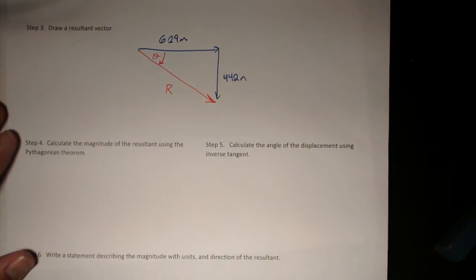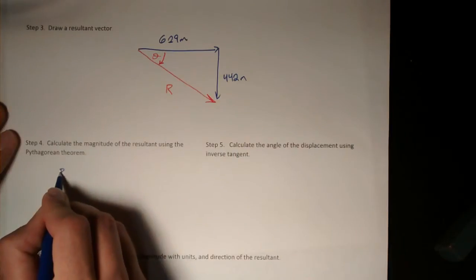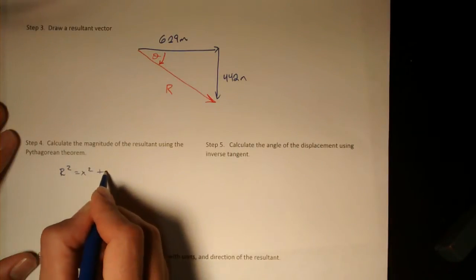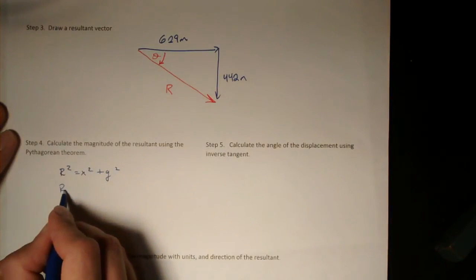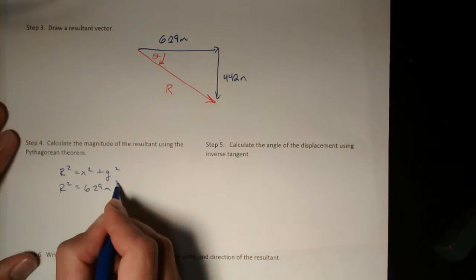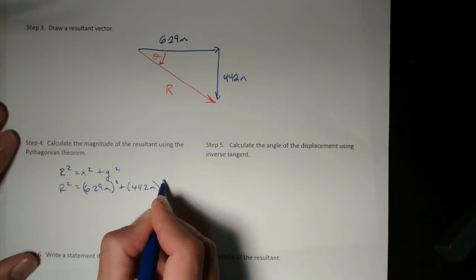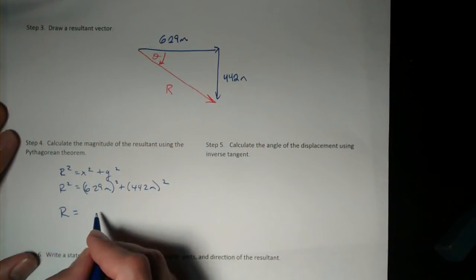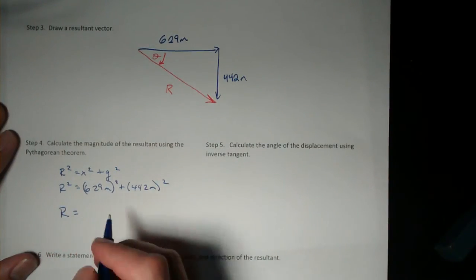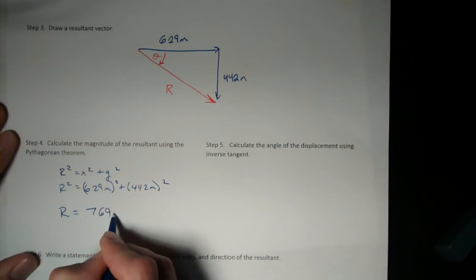To get the magnitude of this resultant, I'll use the Pythagorean theorem. R squared equals x squared plus y squared. R squared equals 629 meters squared plus 442 meters squared. And the magnitude of that resultant comes out to be 769 meters.